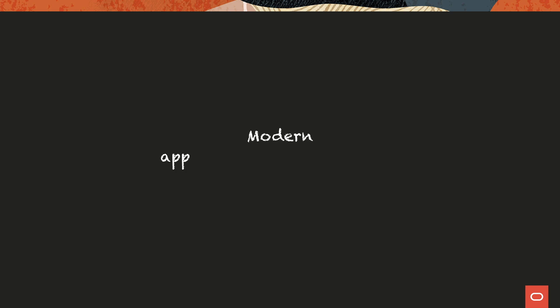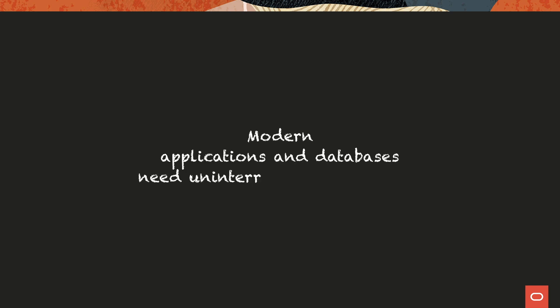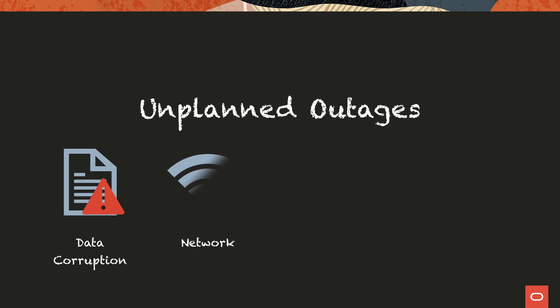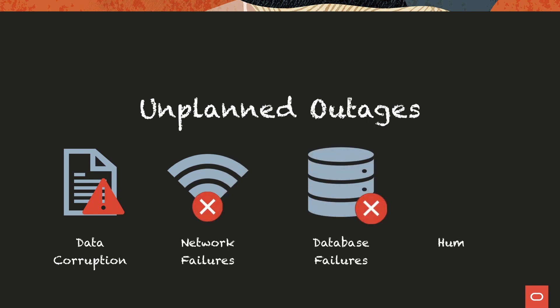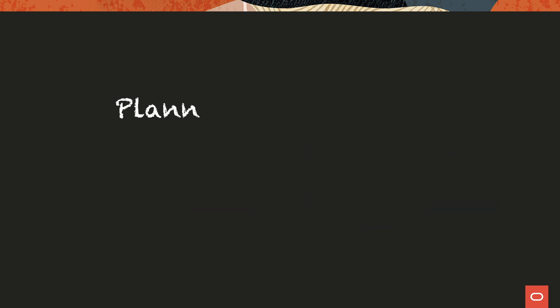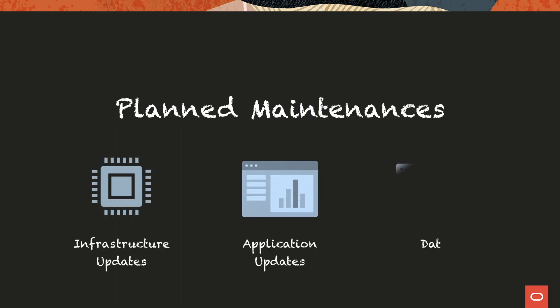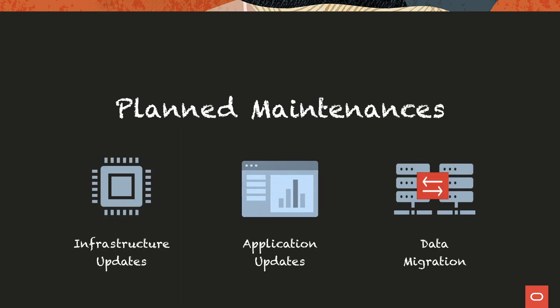Modern applications and databases need uninterrupted availability. This availability is impacted by unplanned outages such as data corruption, network failures, database failures, and human errors. Availability is also impacted by planned maintenance activities such as infrastructure updates, application updates, and data migration.